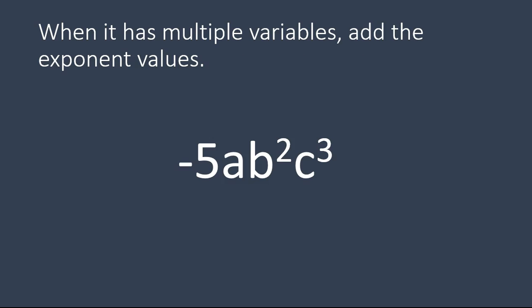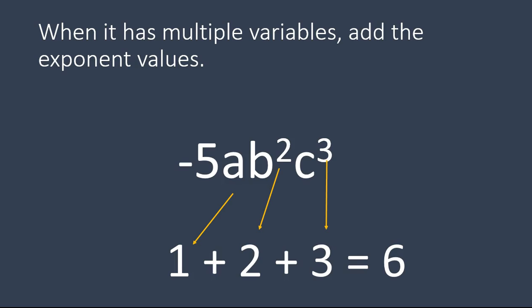What happens when you have multiple variables and you add up the exponents? Let's try another practice question. Tell me, what is the degree of this complicated-looking monomial? Were you able to say 6? a had an exponent of 1, b had an exponent of 2, and c had an exponent of 3. You add them together and you get 6. The degree of that monomial is 6.